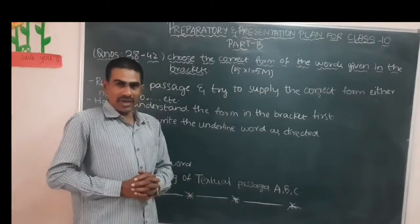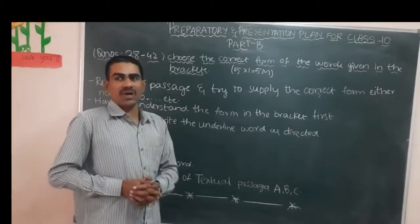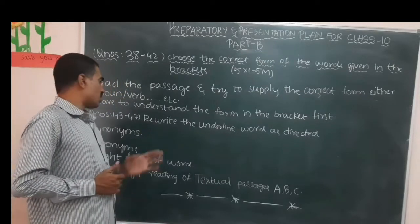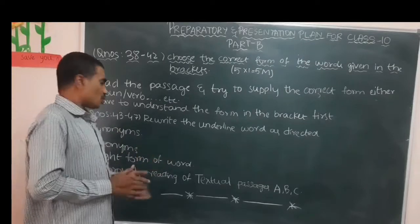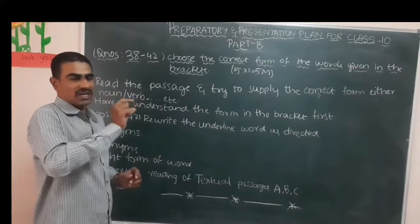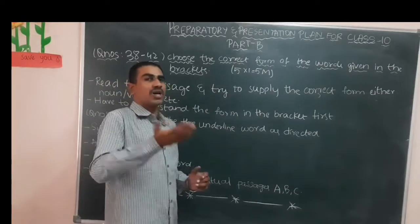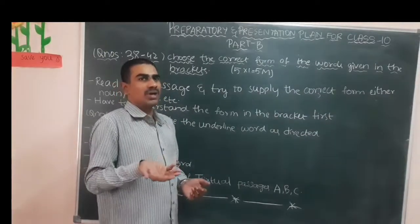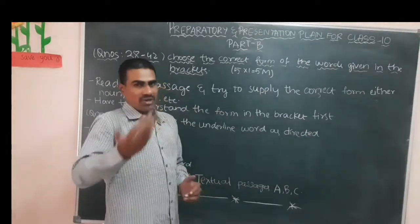This text comes from the textbook itself, so it is a textual passage. If you have a thorough understanding of the textbook, you can definitely write about it. Synonym means the same meaning as the word given; antonym means the opposite meaning. The right form means sometimes another form is given and they ask for the right form or the correct word form — for example, if the word 'write' is given, they may ask for another verb form like 'written.'